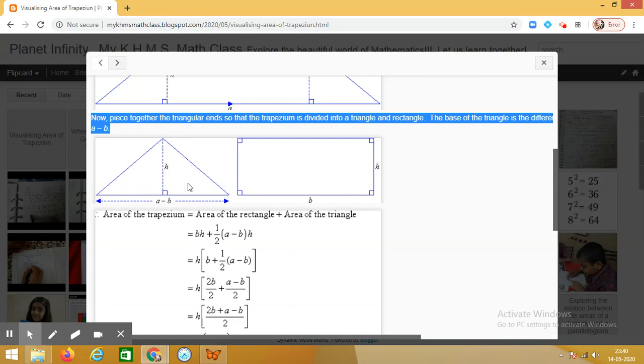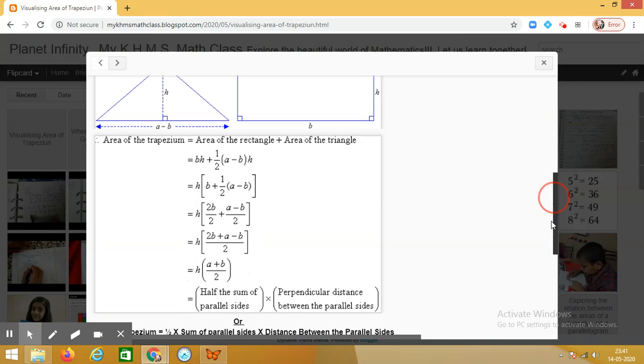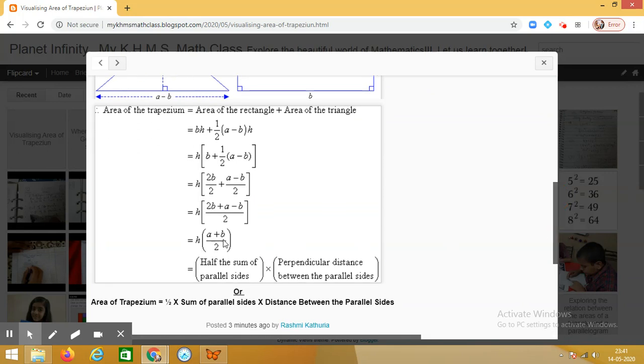Plus, what is the area of the triangle? We calculate it by half base into height. So, this will be half a minus b into h. Add the two together. You can take h common, simplify and after simplification, you will see that the result is coming out to be h into a plus b upon 2.